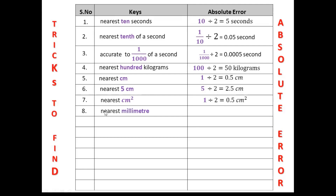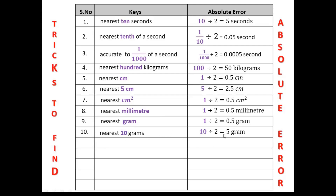If the key is nearest millimeter — nearest 1 millimeter — your absolute error will be 1 divided by 2, which is 0.5 millimeter. If the key is nearest gram or nearest 1 gram, your absolute error will be 1 gram divided by 2, which is 0.5 gram. If the key is nearest 10 grams, your absolute error will be half of 10 grams, which is 5 grams.